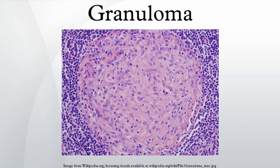Granuloma is an inflammation found in many diseases. It is a collection of immune cells known as macrophages. Granulomas form when the immune system attempts to wall off substances that it perceives as foreign but is unable to eliminate. Such substances include infectious organisms such as bacteria and fungi, as well as other materials such as keratin and suture fragments. The adjective granulomatous means characterized by granulomas.